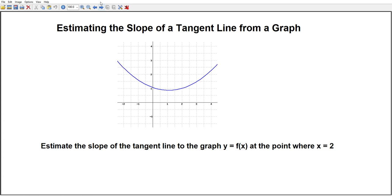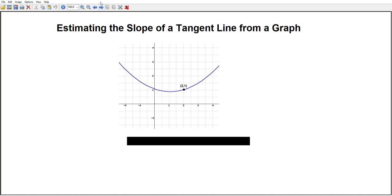We will estimate the slope of the tangent line to the graph y equals f of x pictured above at the point where x equals 2. The first thing we should do is put in the coordinates of the point of tangency.